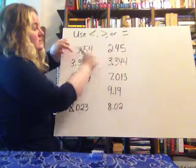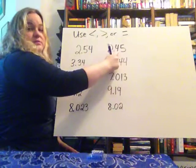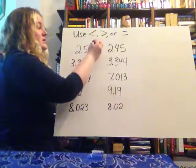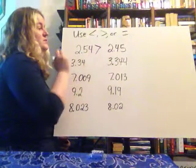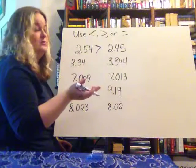Well, in the tenths place, five is bigger than four, which means that this number, 2.54, is greater than 2.45.